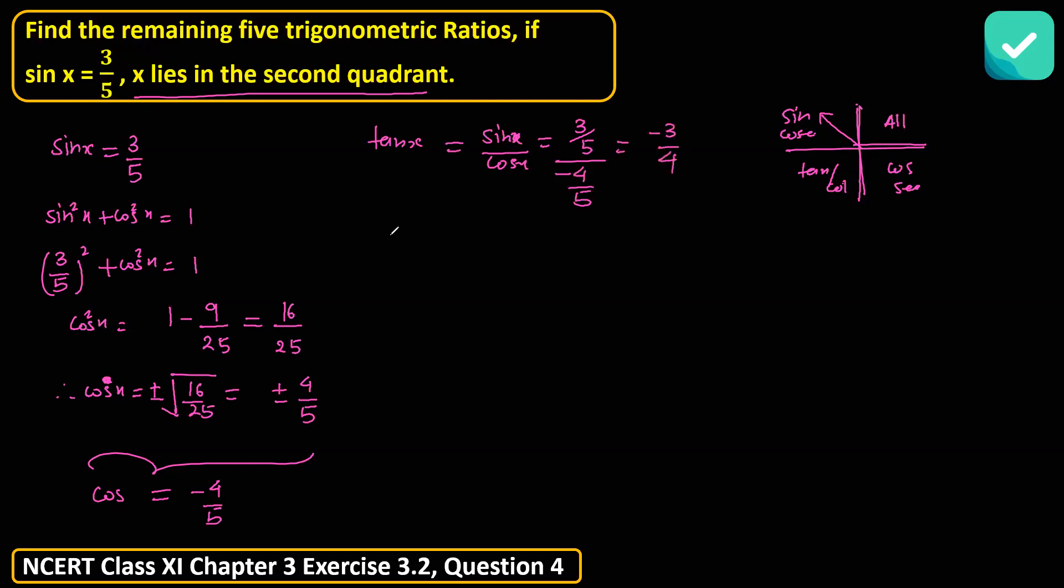Now tan is done. Opposite of tan, cot x is 1 over tan x, so 1 over minus 3 over 4, you will get minus 4 over 3. Next, we can figure out sec x: 1 over cos x. I found cos x minus 4 over 5, so write minus 5 over 4.